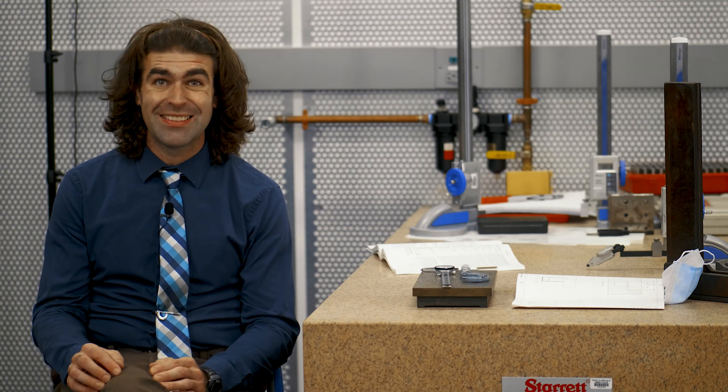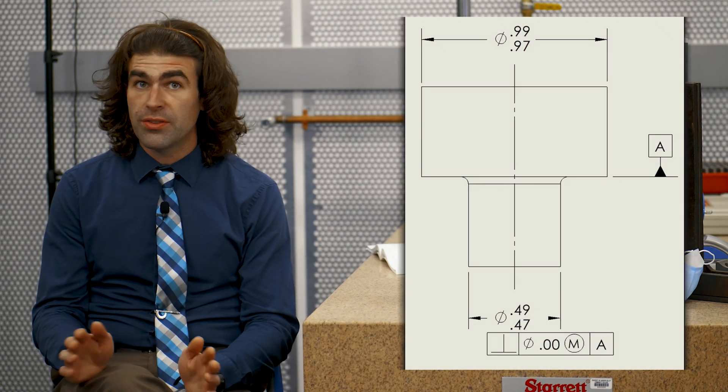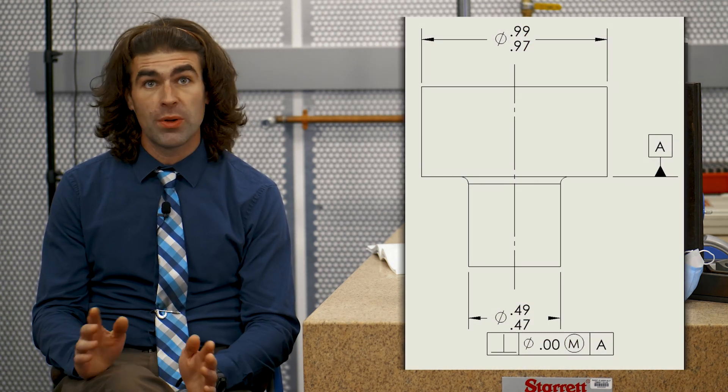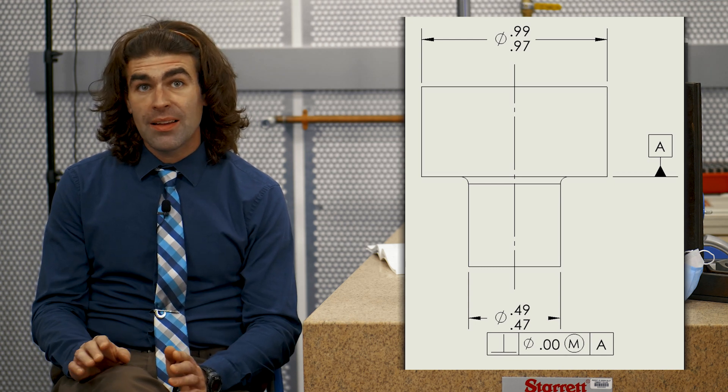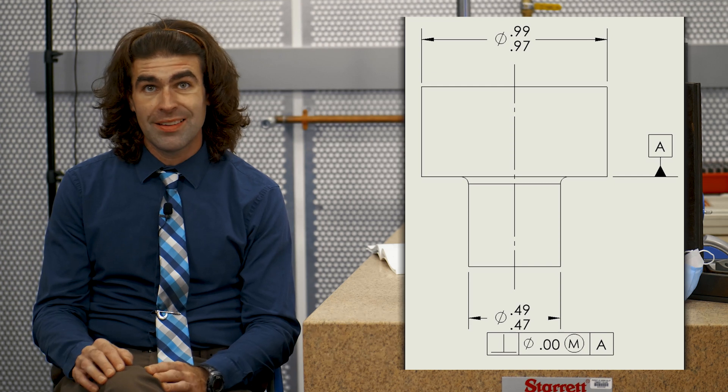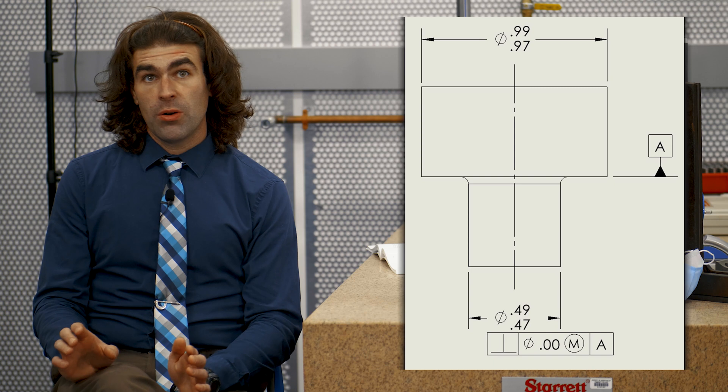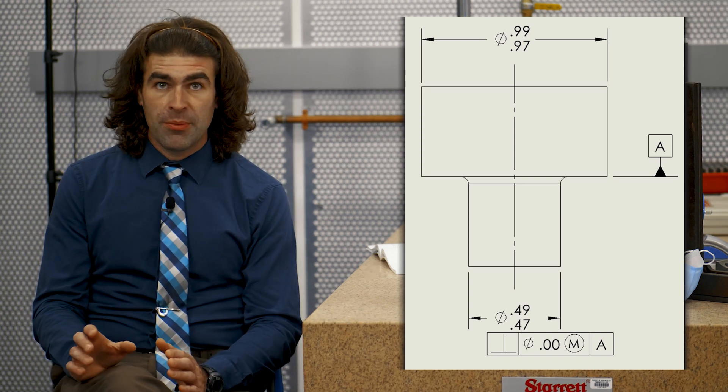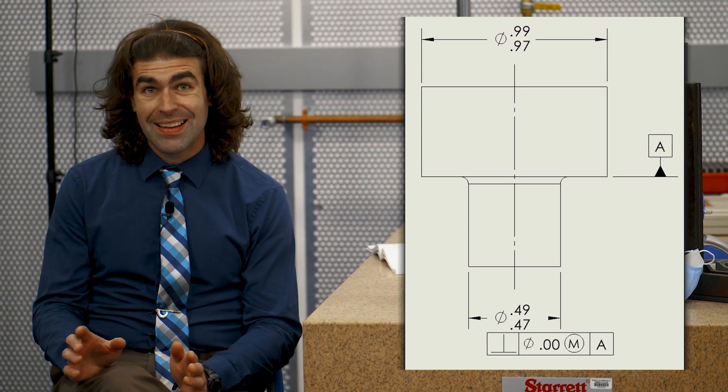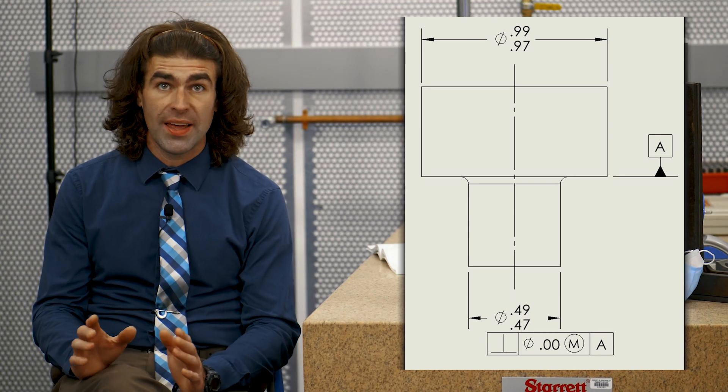Now, what ASME Y14-5 recommends in this situation is to apply perpendicularity tolerance on the axis of one of those features and use a zero at MMC. So what does this do? Let's apply, and I'll put a figure up, a datum to that bottom surface. We'll just arbitrarily choose it as our datum, and we're going to apply a zero at MMC to that bottom diameter. What this does is establish a virtual condition for that feature.